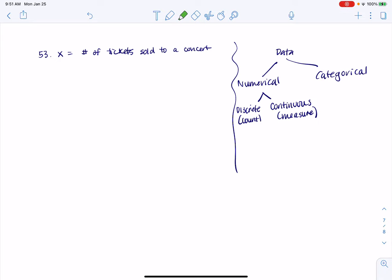So we are looking at the number of tickets sold to a concert and I want to focus in on that word number, right? So as soon as I hear number of I'm thinking, well, this is definitely going to be a numerical variable, right?